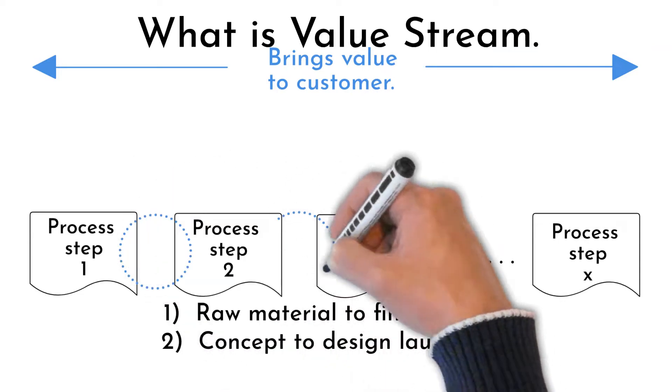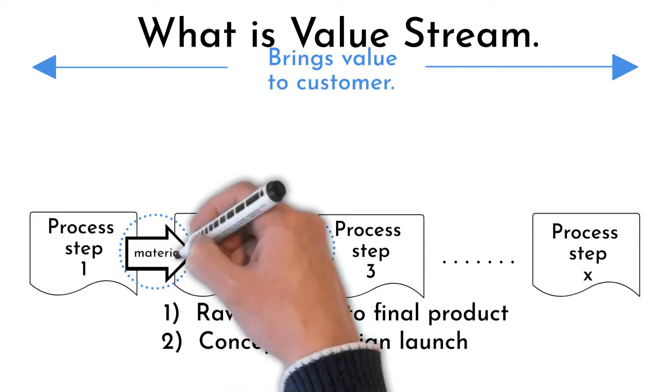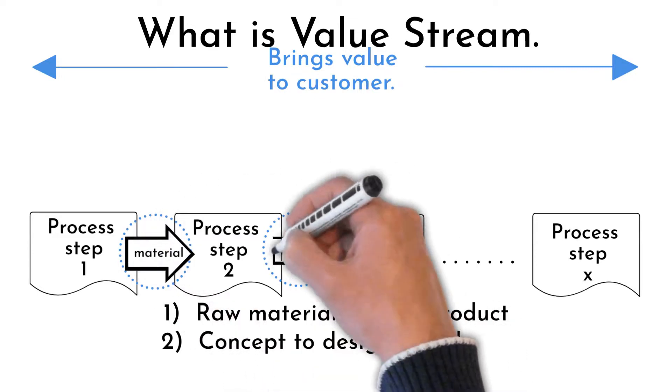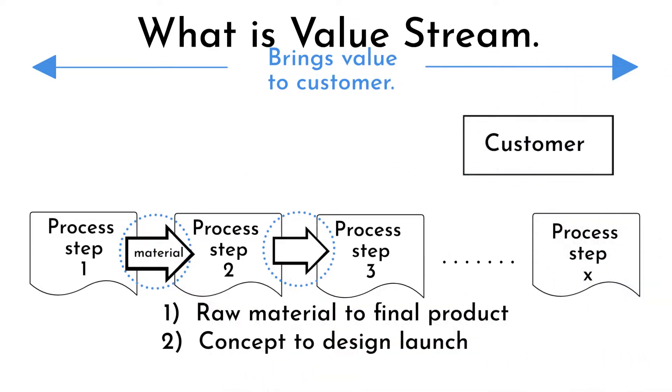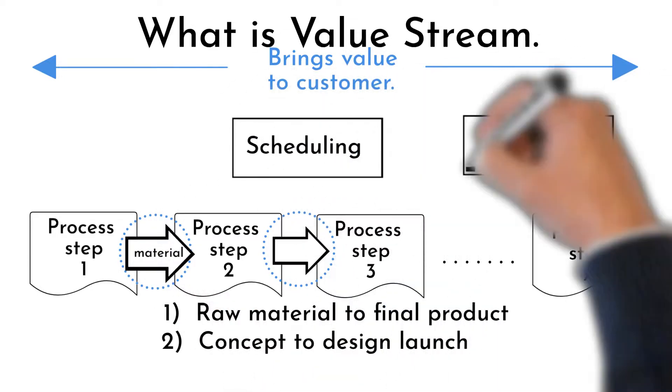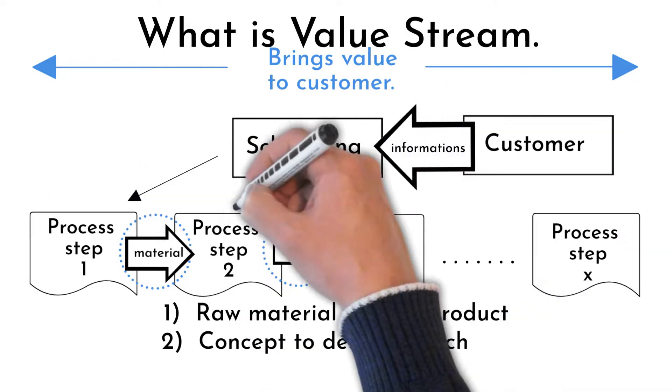Value Stream Map helps to understand connections between value stream single processes, visualize material and information flow through those processes, and how they are linked together.